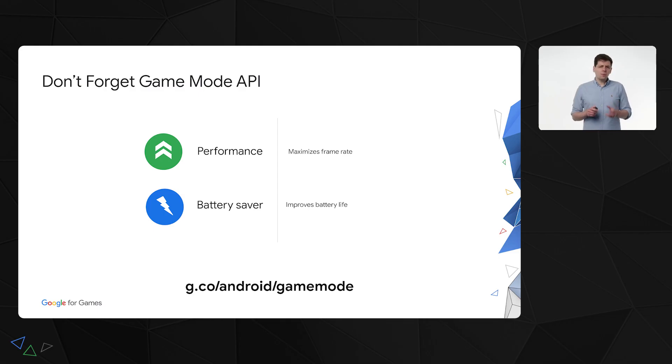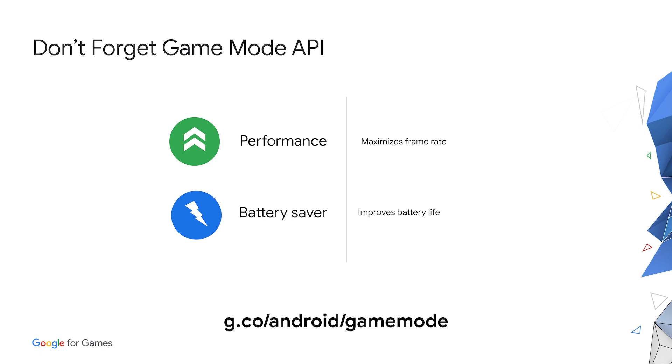Lastly, when we think about optimization, it's important to consider any signals from the user. On select devices, the user can choose between performance or battery saving mode for a game. Game Mode APIs allow developers to query that preference and react to it. The Game Mode API is part of the OS itself rather than AGDK and is available from Android S. You can listen to callbacks to tell you if your user has entered a battery preference or performance preference so you can adjust accordingly. Currently this is supported by Pixel and Samsung devices running Android S, with more devices coming soon. This is part of our broader game dashboard initiative to give users more control over their gameplay experience.